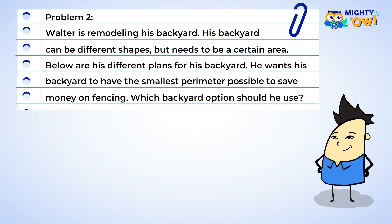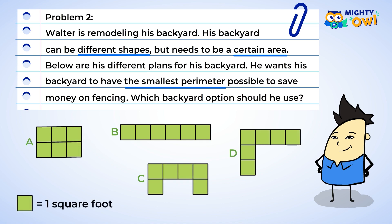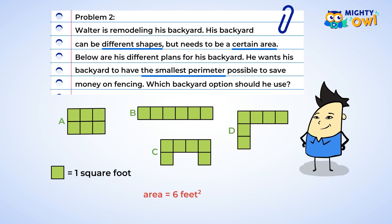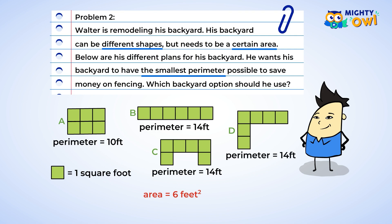One more problem. Walter is remodeling his backyard. His backyard can be different shapes, but needs to be a certain area. Below are his different plans for his backyard. He wants his backyard to have the smallest perimeter possible to save money on fencing. Which backyard option should he use? Since all of the squares are 1 foot, we can count and see that all of the backyard options have an area of 6 square feet. So let's find the perimeter of each of the garden plots by counting around the shapes. Backyard option A has the smallest perimeter with 10 feet, so Walter should choose backyard option A.